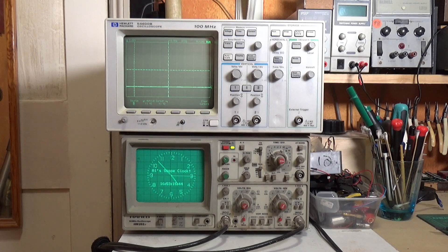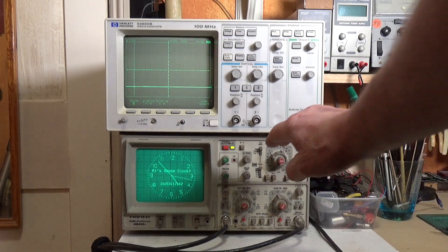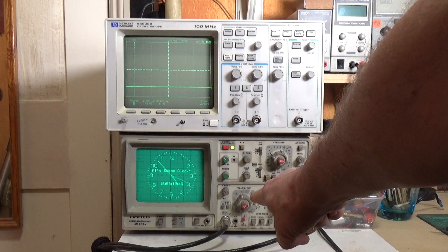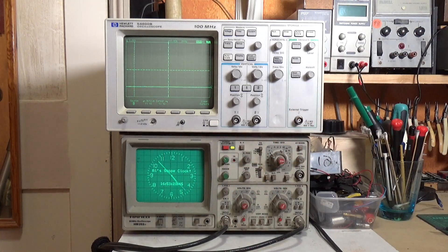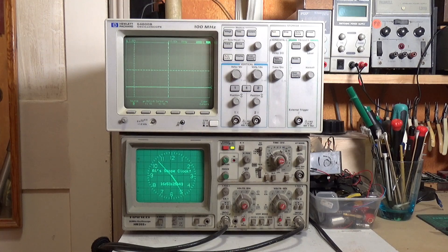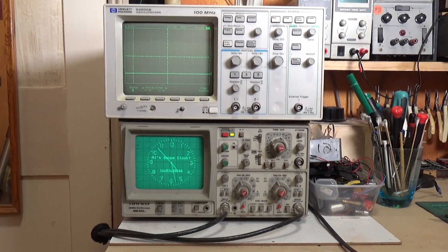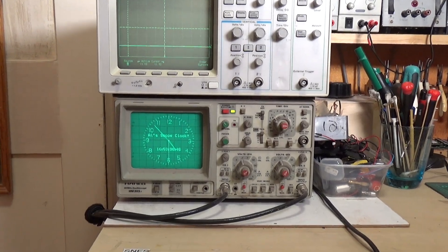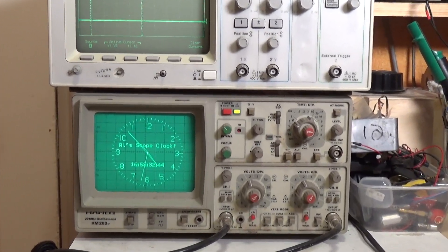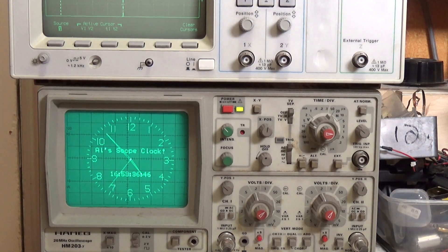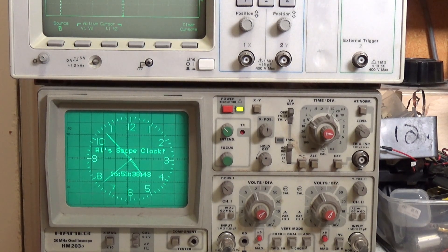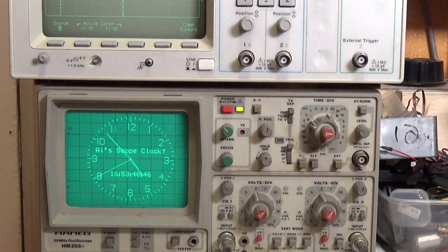This is the lovely old Hameg HM203 analog scope, which is currently showing my scope clock—a rather nice little bit of electronic trickery which allows you to display a clock on a scope which has got an XY input.